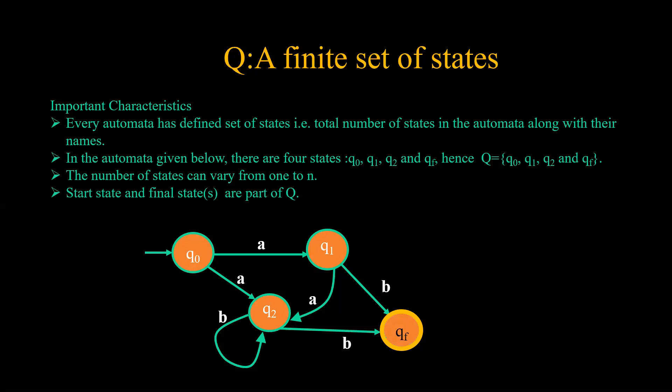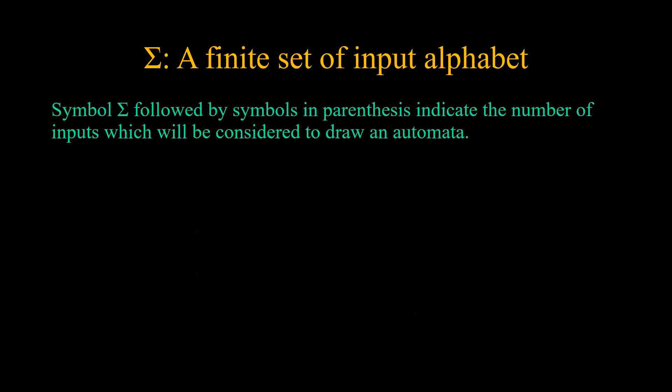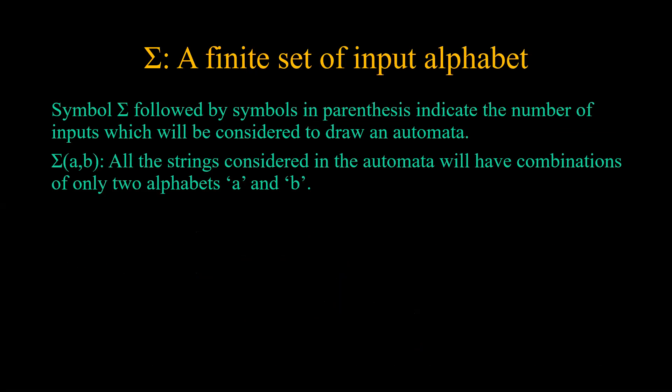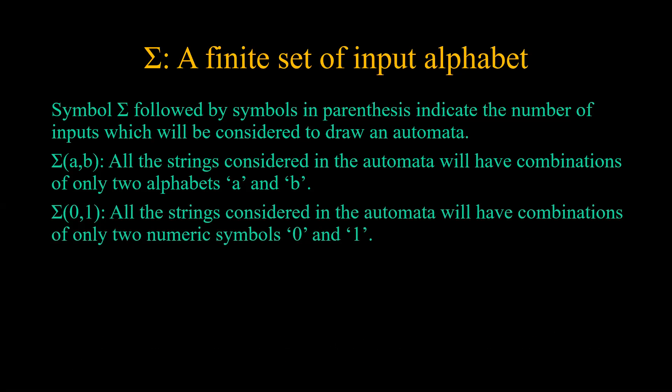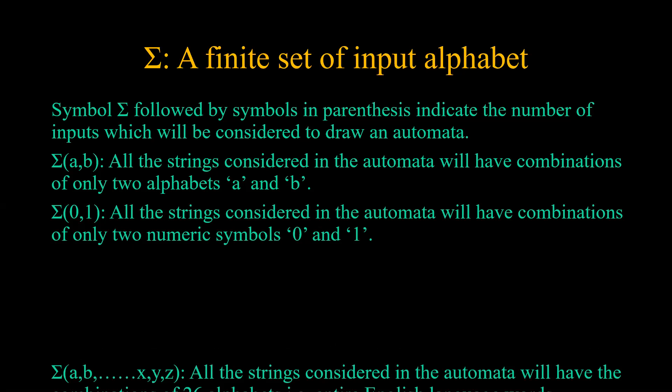Start state and final state are part of Q. Next comes sigma, a finite set of input alphabets. The symbol sigma followed by symbols in parentheses indicates the number of inputs which will be considered to draw an automata. If we have sigma = {A, B}, that means all strings considered in the automata will have a combination of only two alphabets, A and B. If we have sigma = {0, 1}, that means all strings will have a combination of only the two numeric symbols 0 and 1.